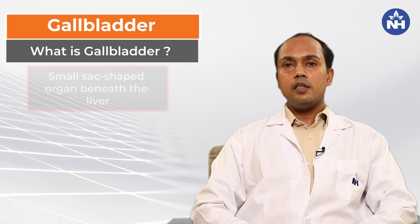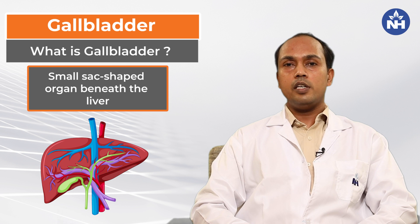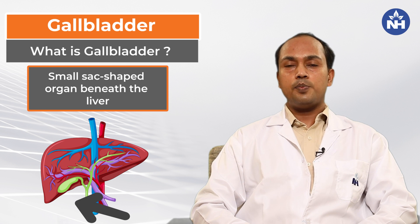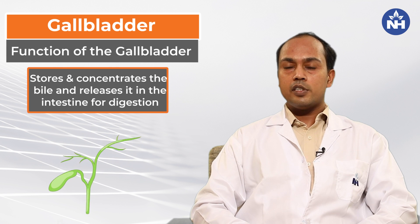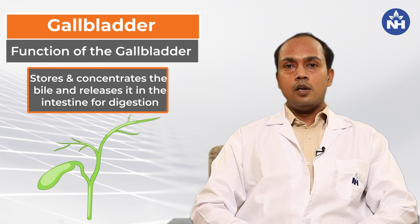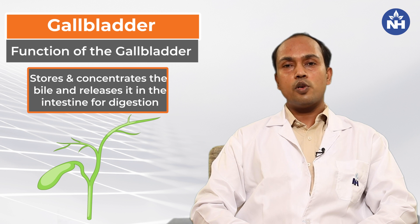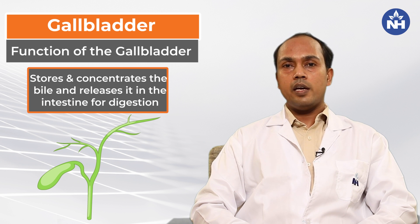First of all, we will talk about the gallbladder. The gallbladder is a small organ that is attached to the liver on its lower surface. The function of the gallbladder is to store bile and concentrate it, and when it is required for the digestion of food, it is released into the intestine.